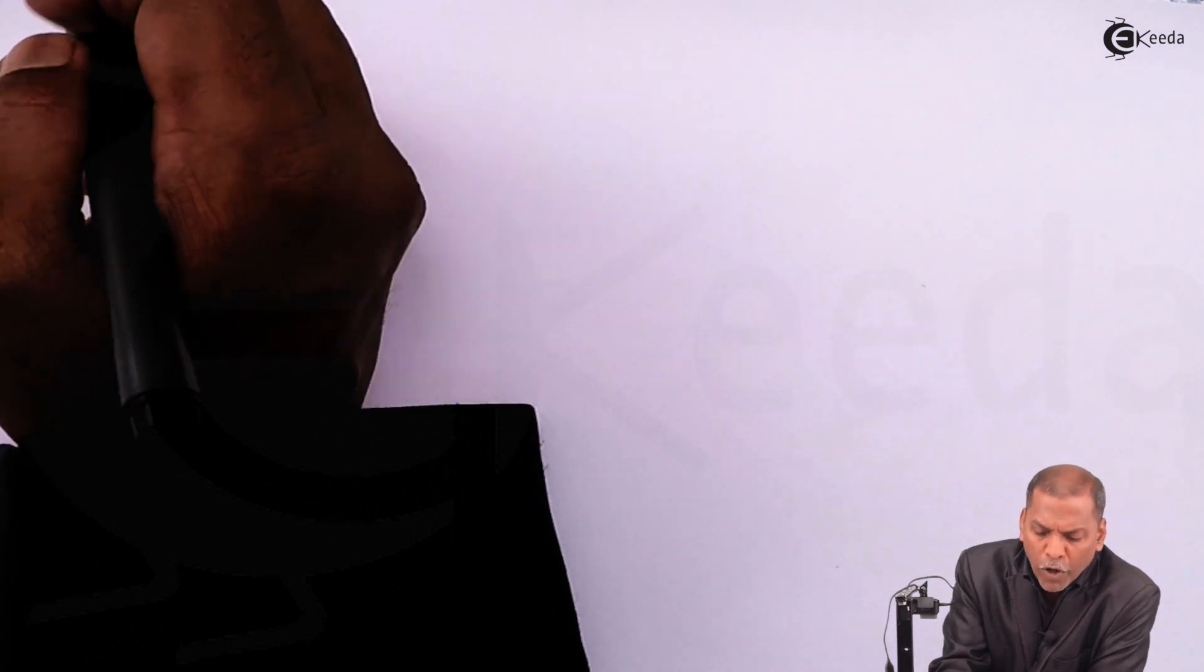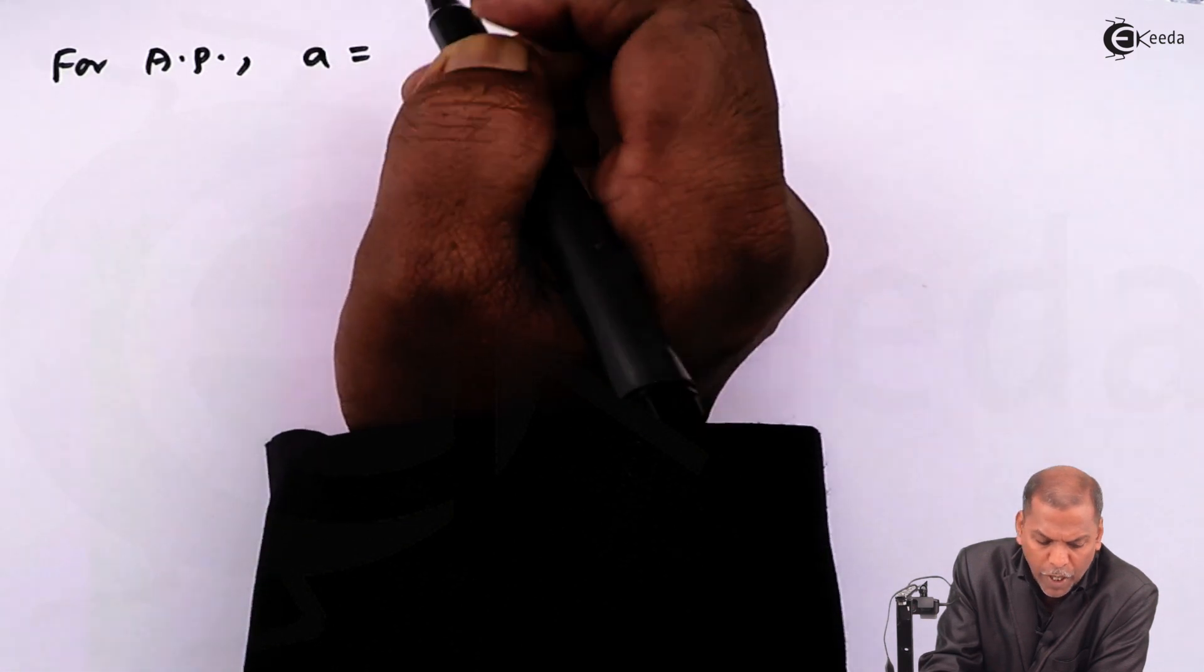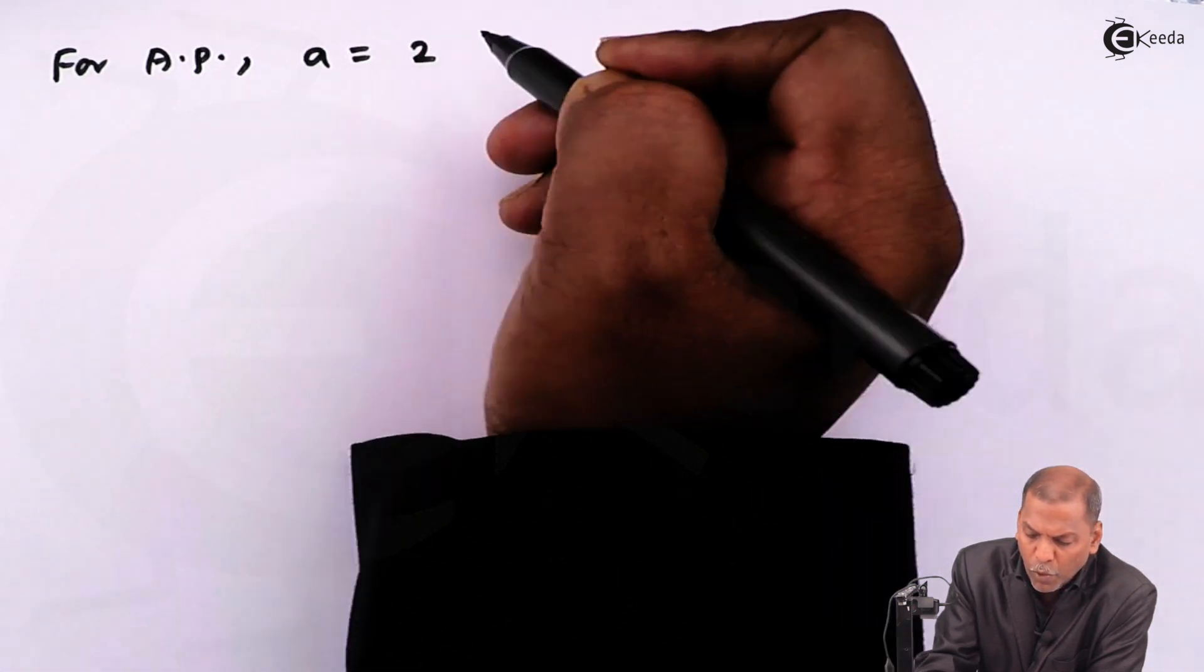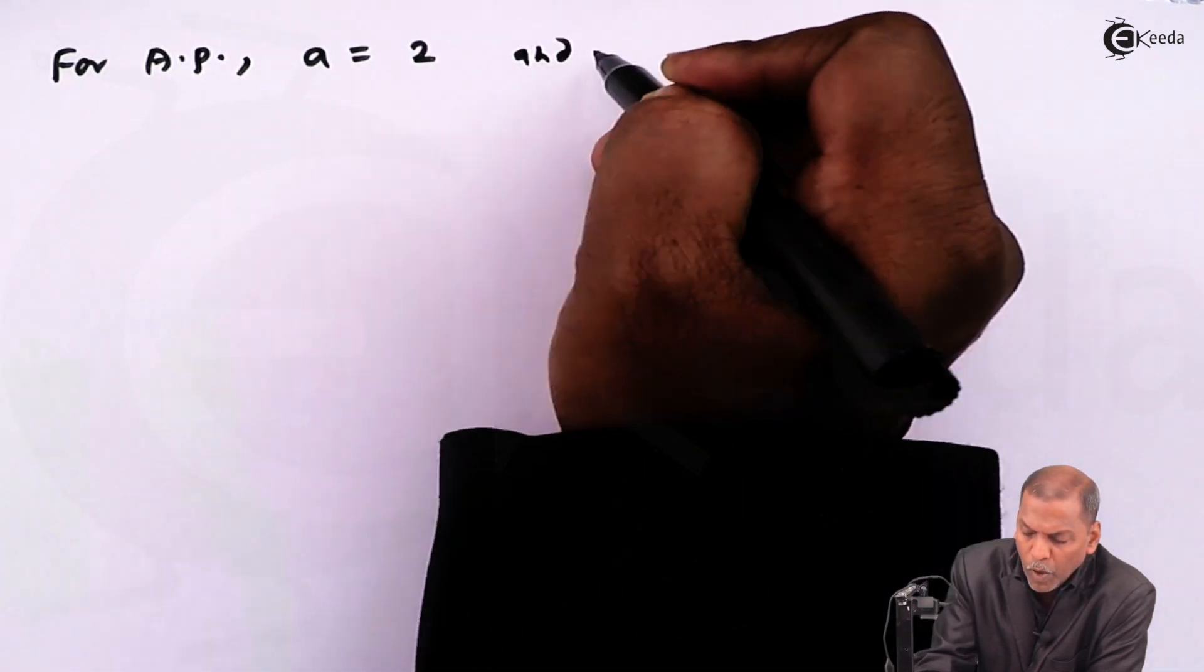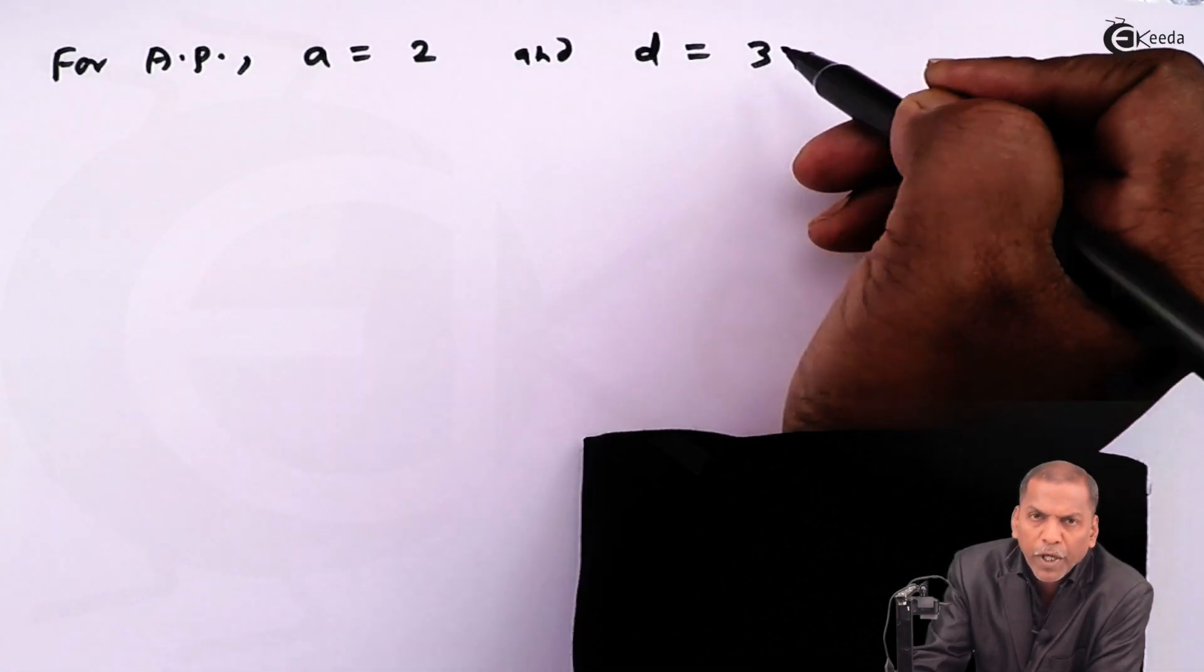First of all, for AP, we have the first term A is equal to two and common difference D equal to three.